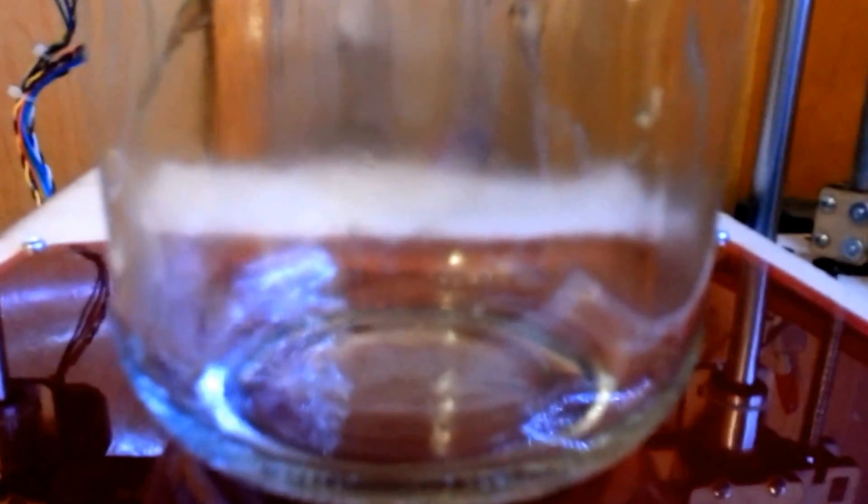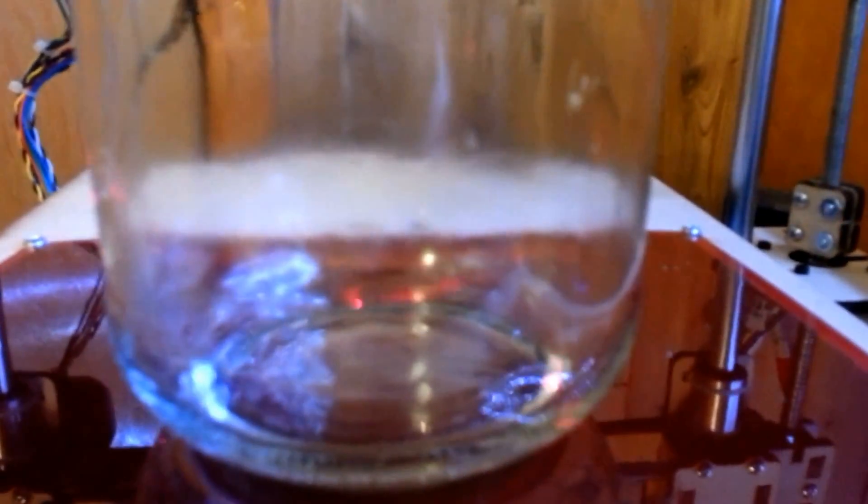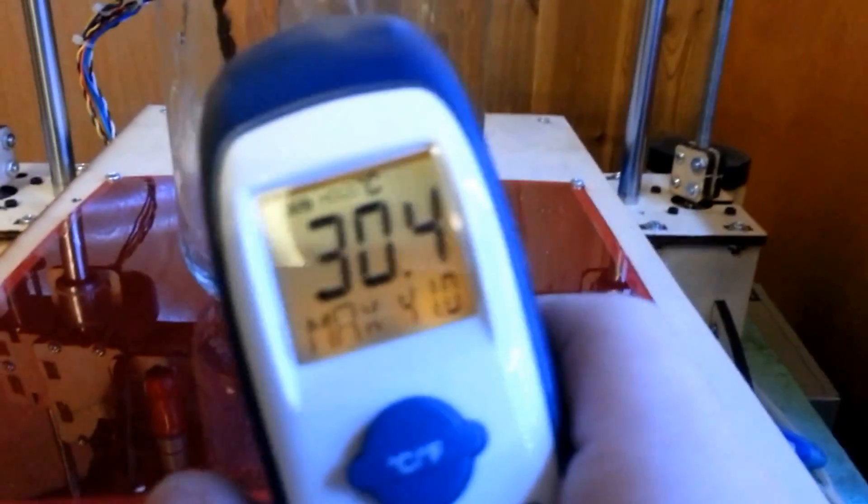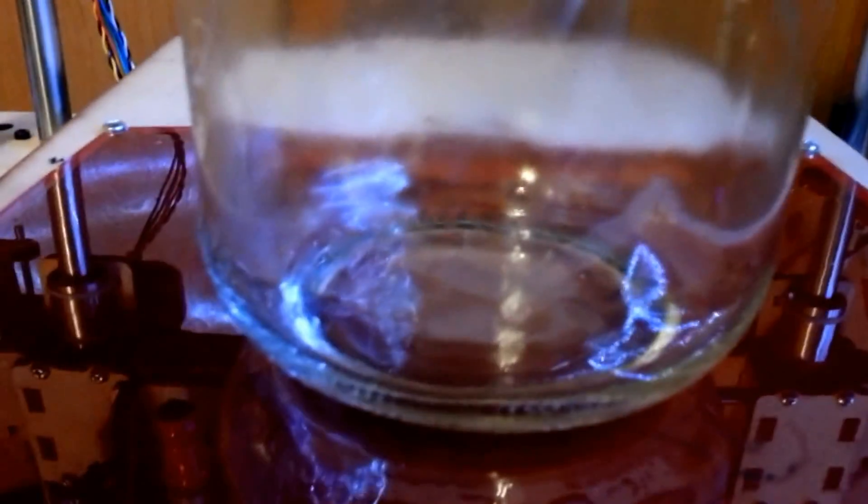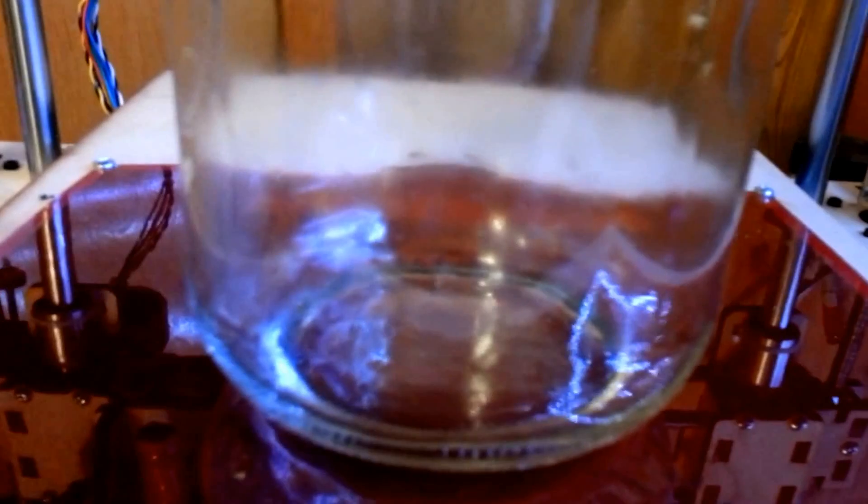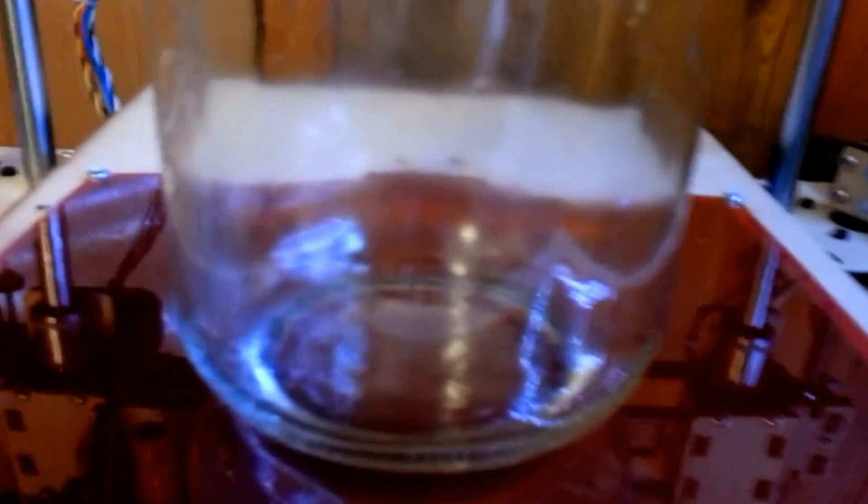Now this is two and a half minutes in and you can start to see some condensation on the jar. And the very bottom is about 40 degrees Celsius, 41. And it looks like we have some vapor so I'm going to start putting in the first model.